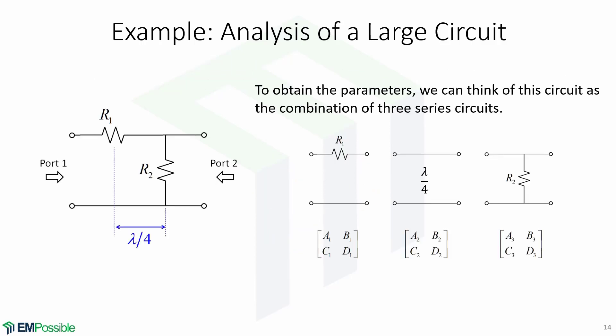To obtain the parameters, we can think of this circuit as a combination of three series circuits. So we are going to split this circuit into three parts. This is the first one, which contains R1, the second one, which contains the transmission line with length lambda over 4, and finally the third element, which contains R2.